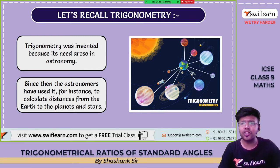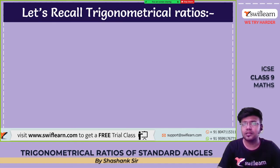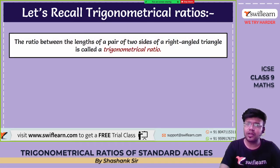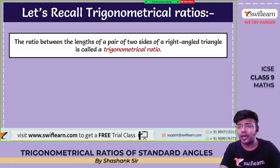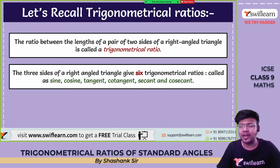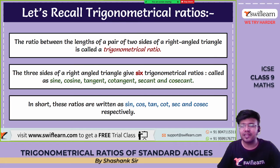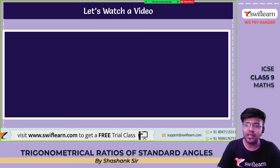Trigonometry was invented because a need arose in astronomy. Since then, astronomers have used it to calculate distances from the earth to planets and stars. The ratios between the lengths of any two sides of a right-angle triangle are called trigonometrical ratios. The three sides give six trigonometrical ratios: sine, cosine, tangent, cotangent, secant, and cosecant — written as sin, cos, tan, cot, sec, cosec.